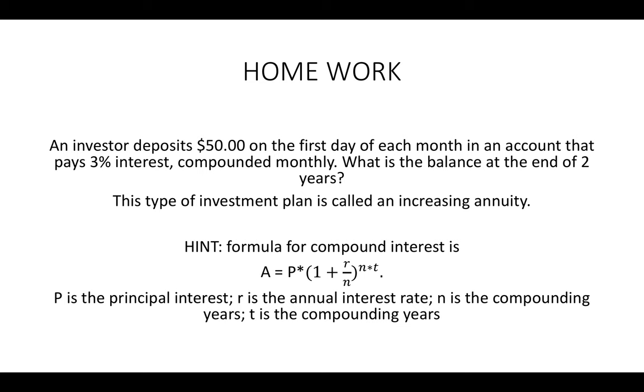So let's take a look at the solution I was sent from a student. An investor deposits $50 on the first day of each month in an account that pays 3% interest compounded monthly. What is the balance at the end of two years? This type of investment plan is called an increasing annuity.